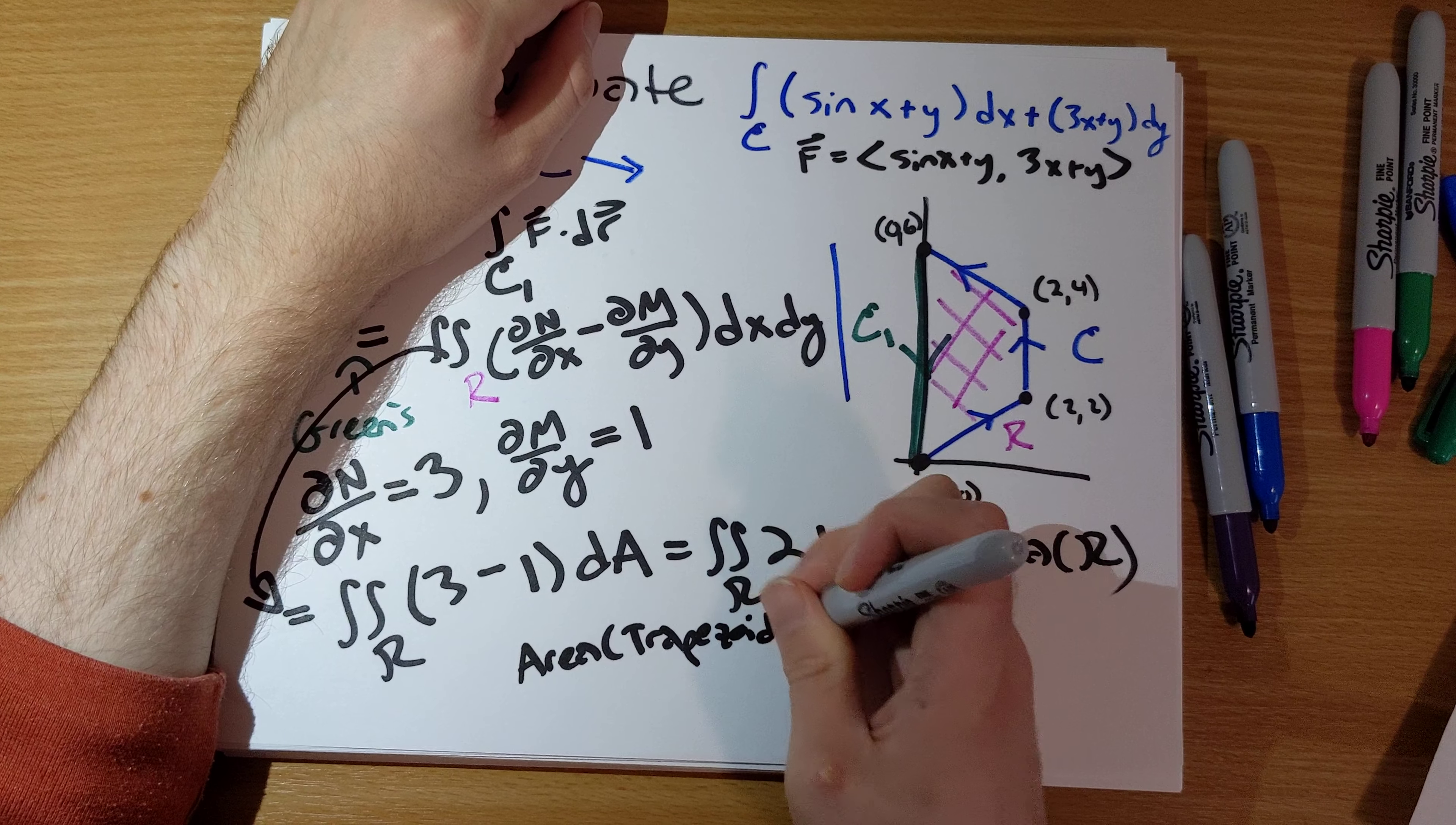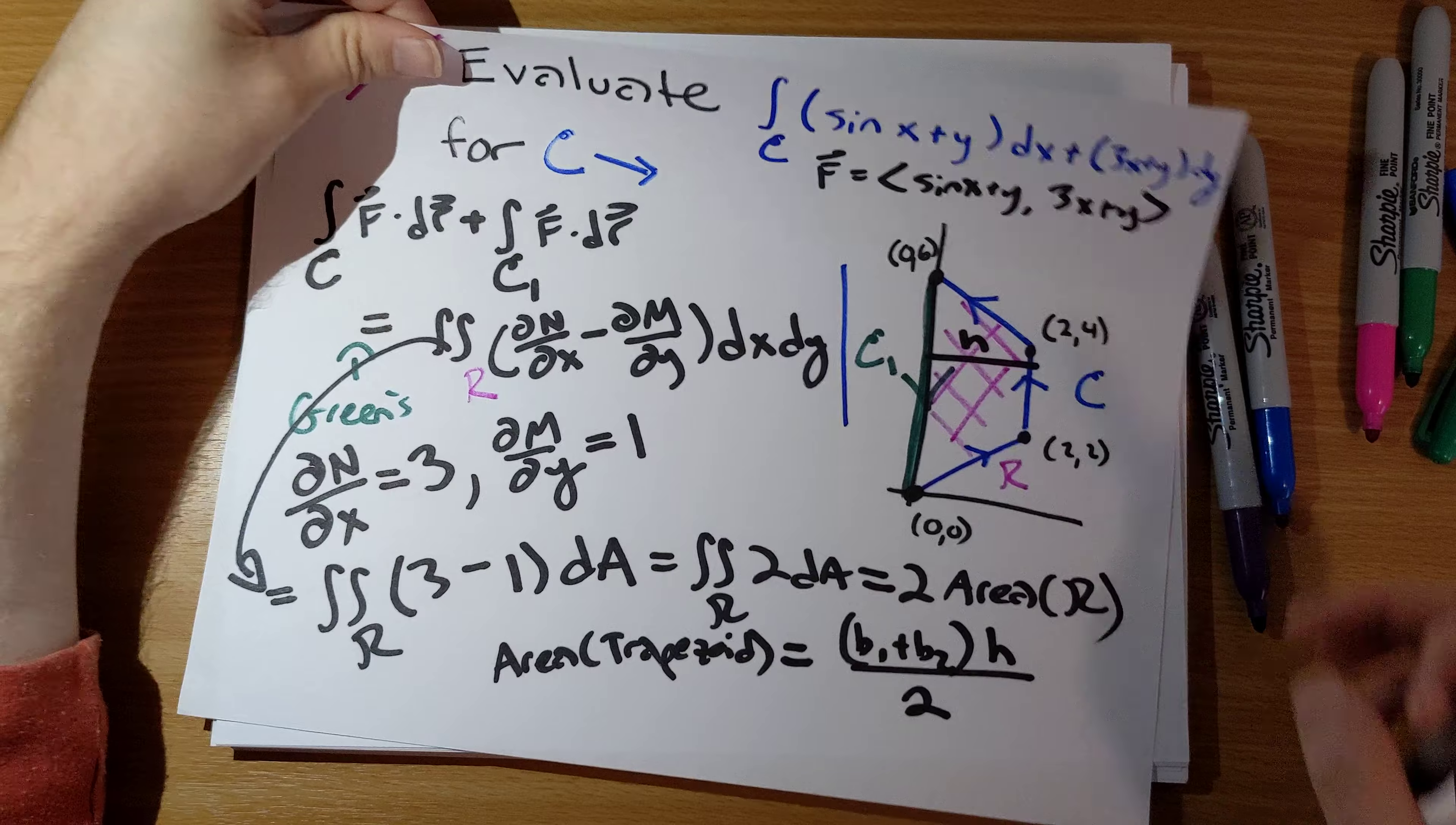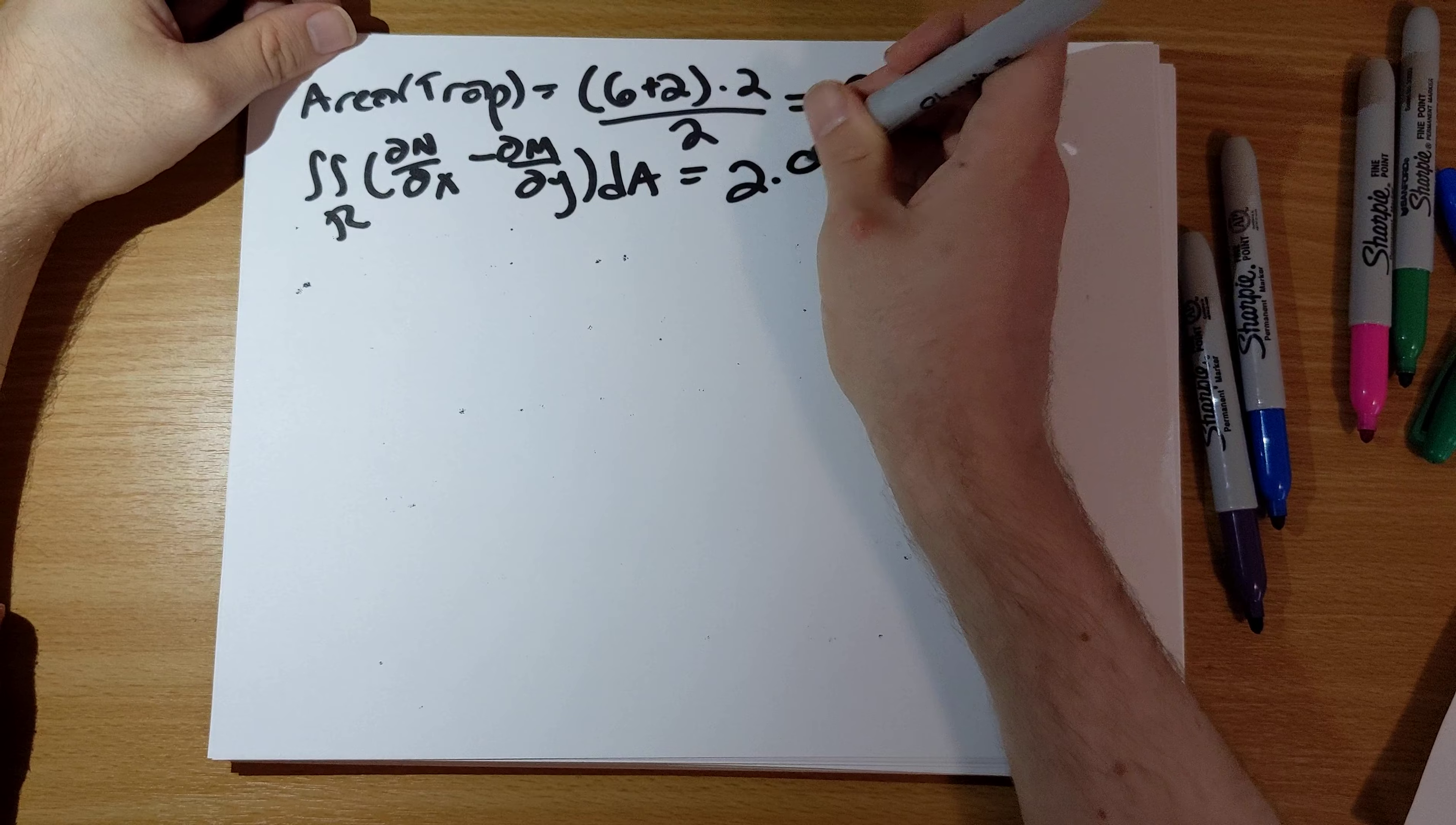The area of a trapezoid: you add the lengths of the two bases together, multiply that sum by the height, and divide by 2. In this case, base 1 is 6, base 2 is 2, the height is 2, all divided by 2, and we get 8. So our double integral equals 2 times 8, which is 16.